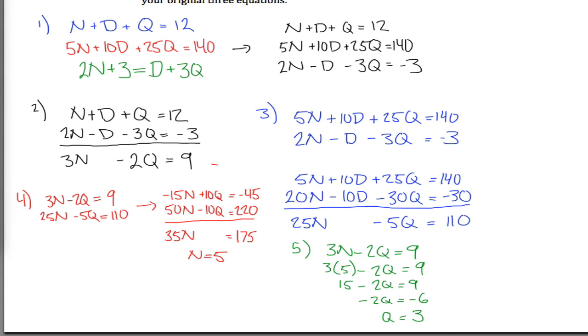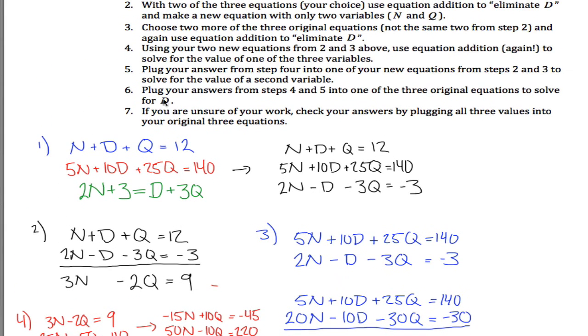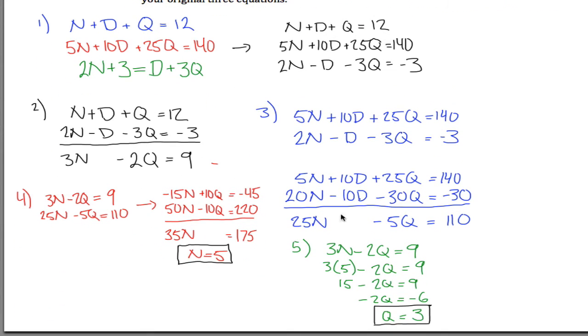So I know that I have 5 nickels from step 4, and I know that I have 3 quarters from step 5, and then in step 6, I can use my answers from step 4 and 5 and plug it into one of the original equations. So I have my choice of any of the original equations. I think I'm going to choose the simplest of the original equations, N plus D plus Q is equal to 12, and plug in N equals 5, and Q equals 3 to get this equation here.